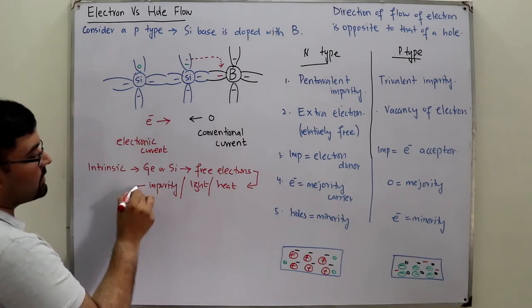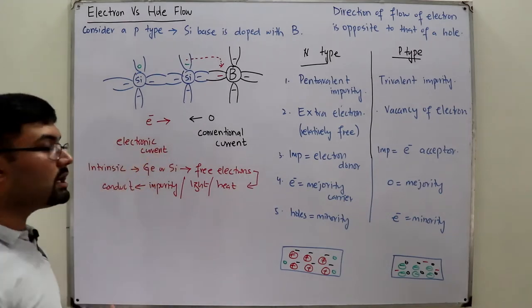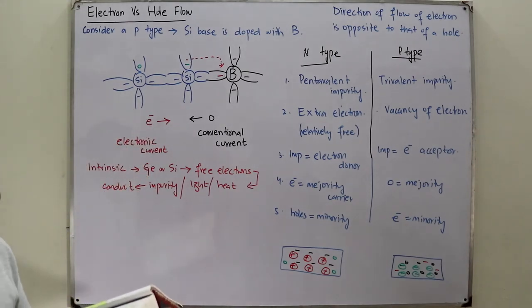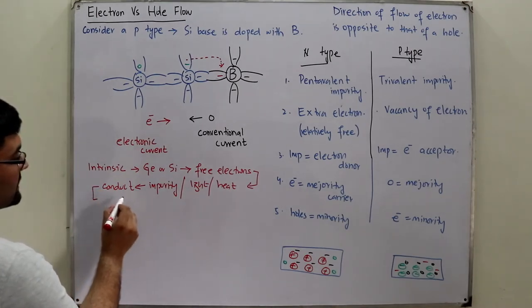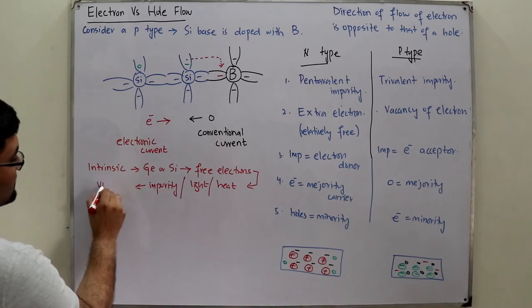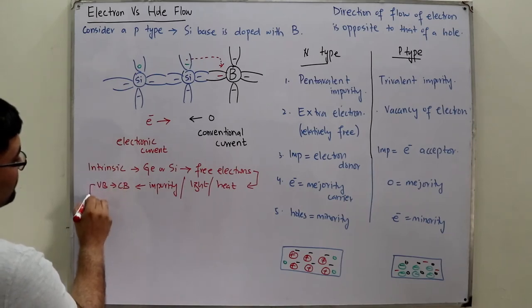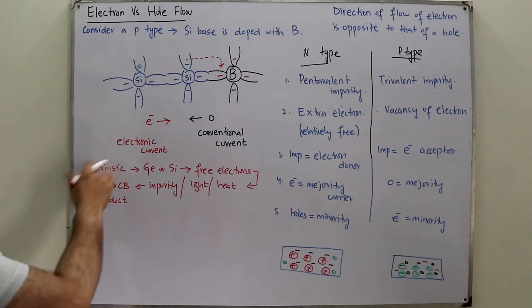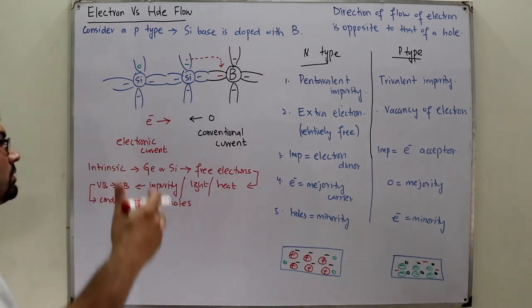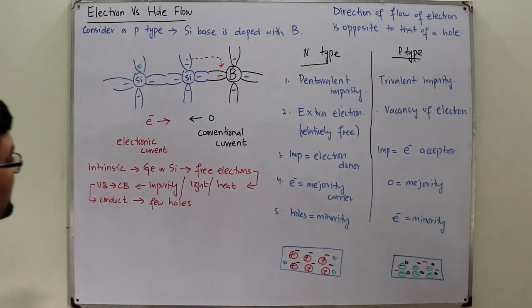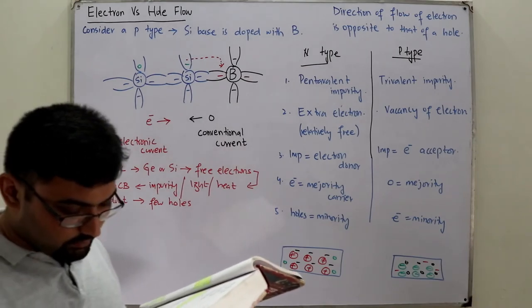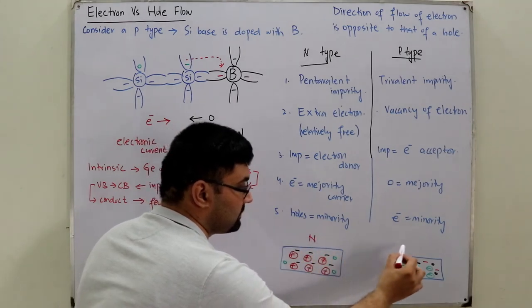Those free electrons will conduct because they are given energy to go from the valence band to the conduction band, but they are only very few in number. When they go to the conduction band, only a few holes are left behind. Because those electrons are very few in number, you have very few holes left behind. That is the reason holes are the minority charge carriers in n-type material.